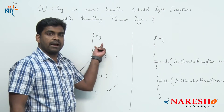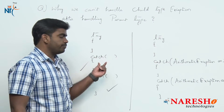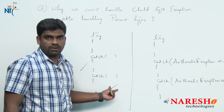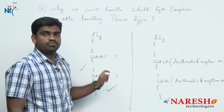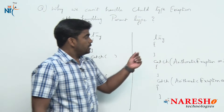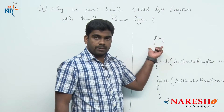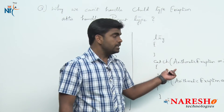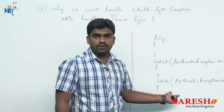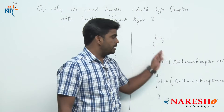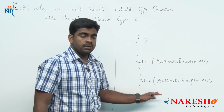So to recap: one try block can have N number of catch blocks in a Java application — that is allowed. But using one try block, you cannot handle the same exception more than one time.